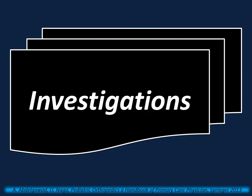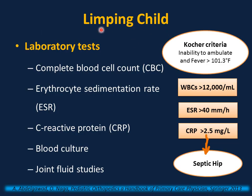Investigations for a child with limp — laboratory testing depends on the clinical presentation and may include CBC, erythrocyte sedimentation rate, CRP, blood culture, and joint fluid studies. Very important to be familiar with the Kocher criteria for septic hip: inability to ambulate, fever more than 101.3°F, white blood cells more than 12,000, ESR more than 40, and CRP more than 2.5.